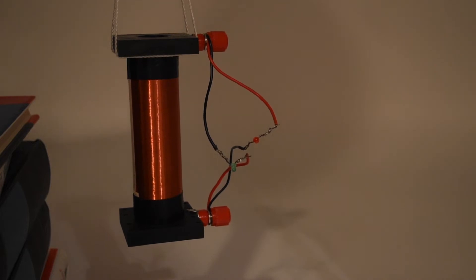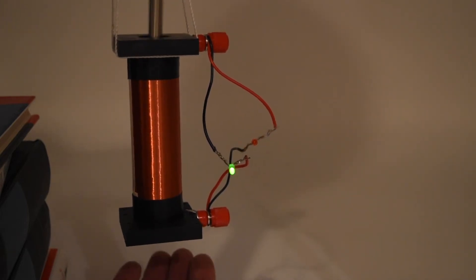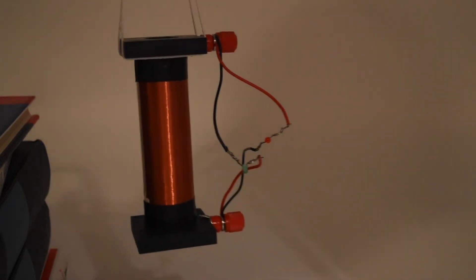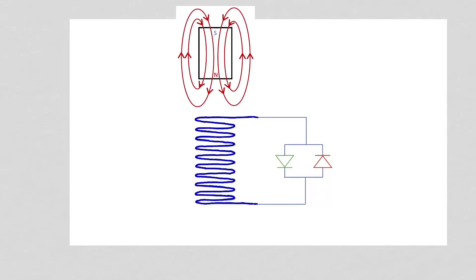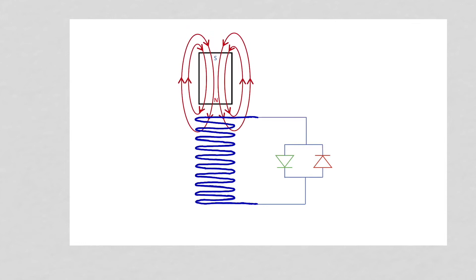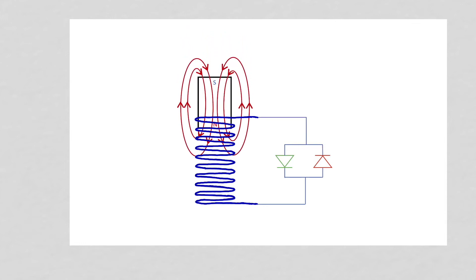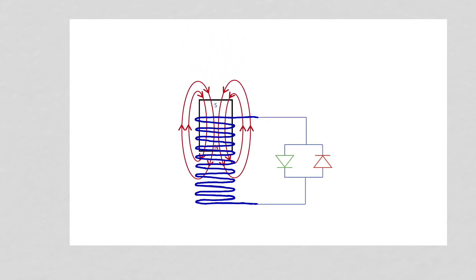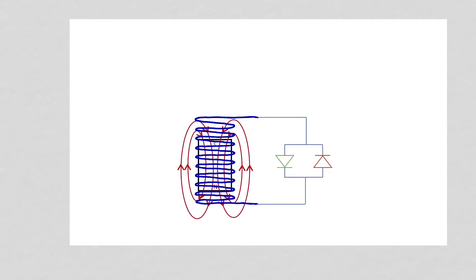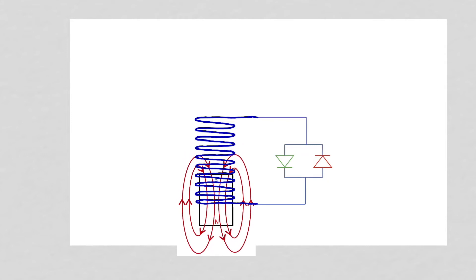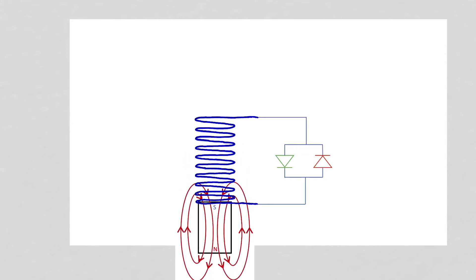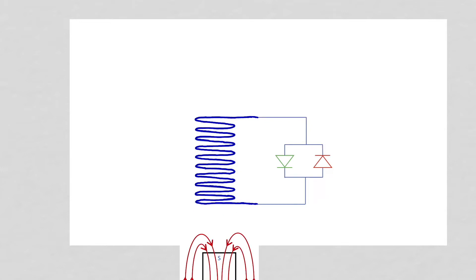This behavior can be explained with Faraday's law, and it's referred to as electromagnetic induction. As the magnet falls and enters the coil, there is an increase in magnetic flux inside the coil, and as the magnet leaves the coil there is a decrease in magnetic flux inside the coil.